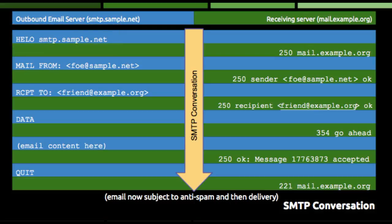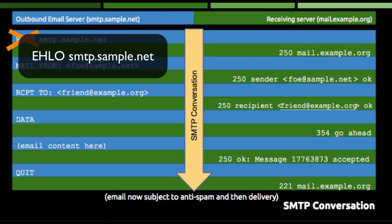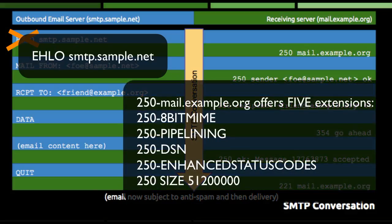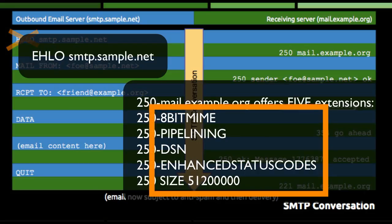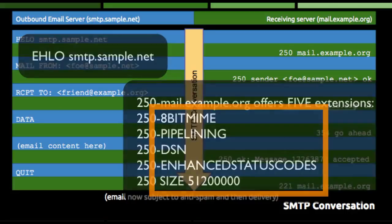As a side note, this is just a sample conversation to show how it works. In the real world, the hello command has largely been replaced with the EHLO command, pronounced E-H-L-O, which allows the receiving server to pass information about the receiving server's abilities back to the outbound server as part of the reply to the EHLO command. Extensions to SMTP are added every once in a while, which keeps email fresh, but also turns the S part of SMTP into a bit of a joke.